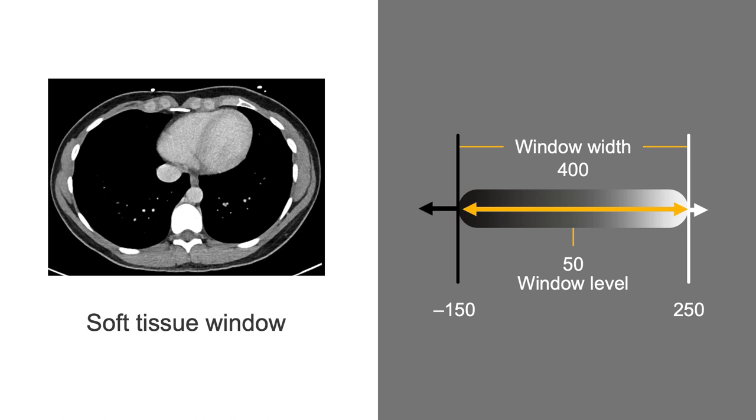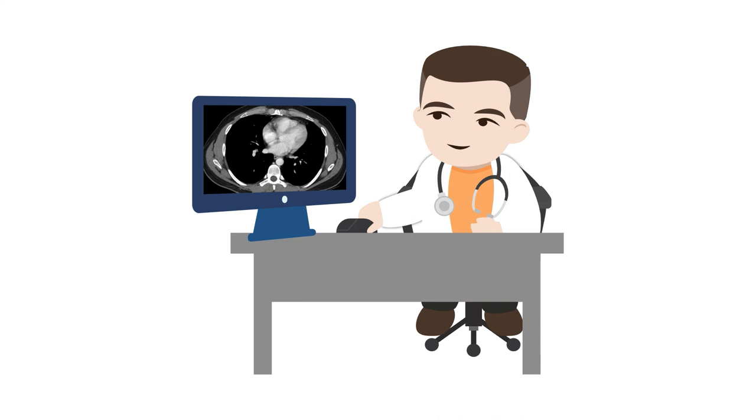The specific settings in the soft tissue window help us to see relatively subtle but important differences in enhancement or densities of structures like the liver, spleen, pancreas, and kidneys, which help us diagnose different diseases.